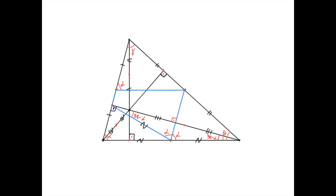Now take a look at what we did. We took the circumcircle of the triangle defined by the three midpoints of the triangle sides, and we proved that one of the feet of the altitudes in the triangle lies on that circumcircle. And therefore, by symmetry of argument, this point also lies on that circumcircle, and this point also lies on the circumcircle, because there is nothing special about this foot of the altitude. We could have proven the same thing for this foot of the altitude and this foot of the altitude as well.